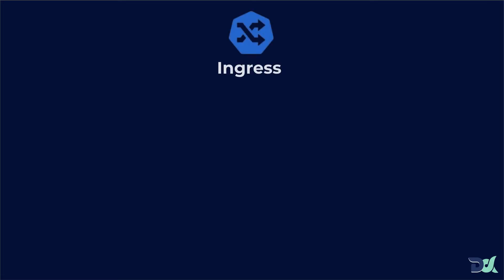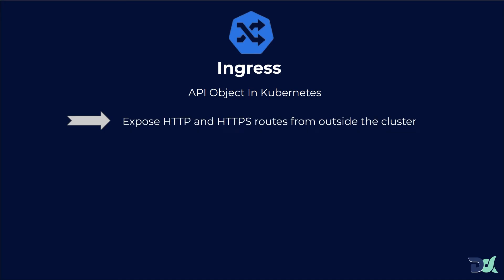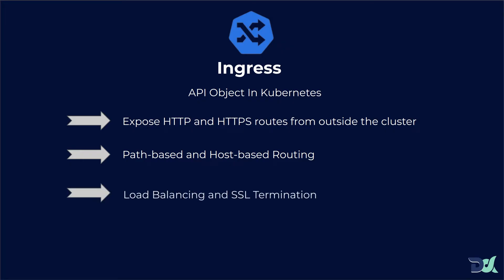Now we are going to talk about Ingress. Ingress is an API object in Kubernetes, the same as a deployment or service API object. Ingress exposes HTTP and HTTPS routes from outside the cluster — meaning it makes our application accessible from outside. The second thing is path-based and host-based routing. Third and last is load balancing and SSL termination. Ingress provides SSL termination, and Kubernetes has many such facilities we can achieve.